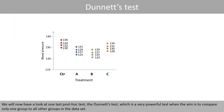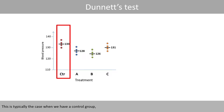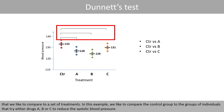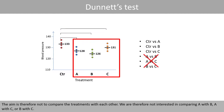We'll now look at one last post-hoc test — Dunnett's test — which is a very powerful test when the aim is to compare only one group to all other groups in the dataset. This is typically the case when you have a control group that you want to compare to a set of treatments. In this example, we compare the control group to groups of individuals trying drugs A, B, or C to reduce systolic blood pressure. The aim is not to compare the treatments with each other — we are not interested in comparing A with B, A with C, or B with C.